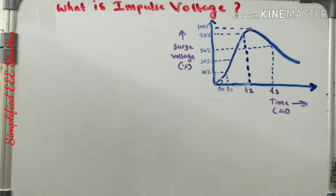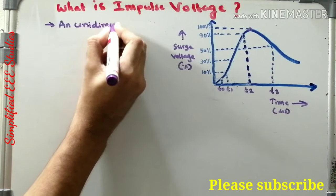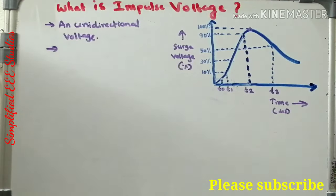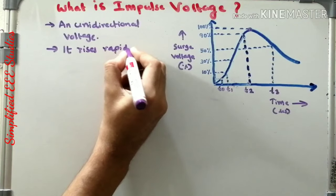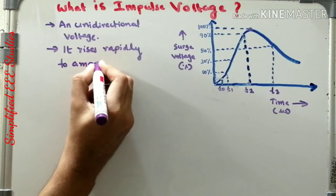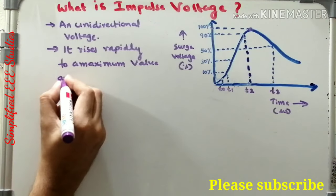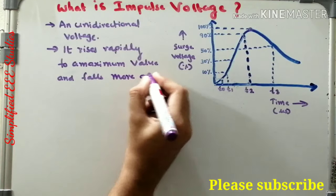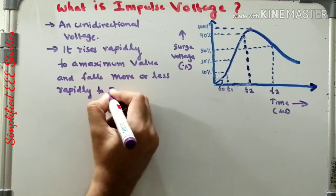Impulse voltage is basically a unidirectional voltage. It rises rapidly to a maximum value and falls more or less rapidly to zero.